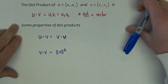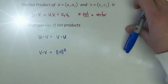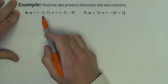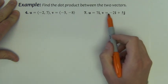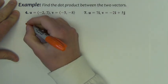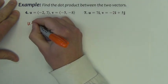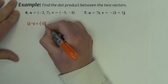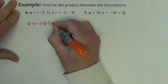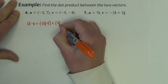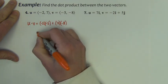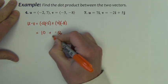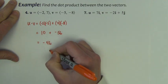Now let's do a couple of examples of actually finding the dot product between two vectors. First example, find the dot product between the two vectors. I gave you an example in component form. If I want to find u·v, I simply take the x's multiplied plus the y's multiplied. So I get 10 plus negative 56, the dot product is negative 46.